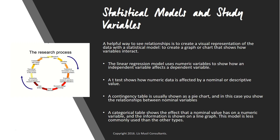A t-test shows how numeric data is affected by a nominal or descriptive value — for example, the number of women who responded yes to riding the train and the number who responded no. You would typically display this in a bar graph. A contingency table is usually shown as a pie chart, where you show the relationship between nominal variables — for instance, a large slice for the percentage of women who said yes, a small slice for women who said no, and corresponding slices for men. A categorical table shows the effect that a nominal value has on a numeric variable and is displayed on a line graph; this model is less commonly used than the other types.